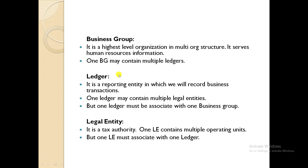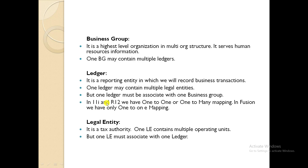After Business Group we have the Ledger. The Ledger is basically the General Ledger concept — when we have to store any type of business transaction, that transaction gets saved into the Ledger. The difference between 11i/R12 and Fusion is that in 11i and R12 we have one-to-one or one-to-many mapping between Ledger and Legal Entity, but in Fusion we have only one-to-one mapping.